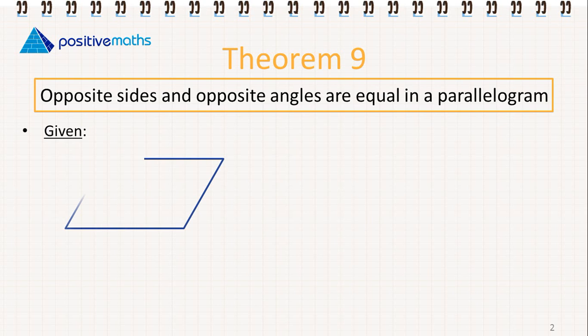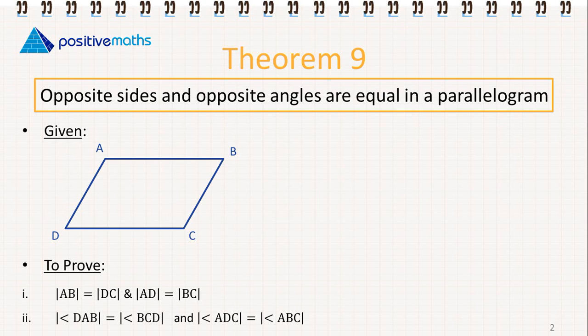What we're given is a parallelogram ABCD. We want to prove that side AB is equal to DC, and side AD is equal to BC. We also want to prove that angle DAB is equal to angle BCD, and angle ADC is equal to angle ABC.